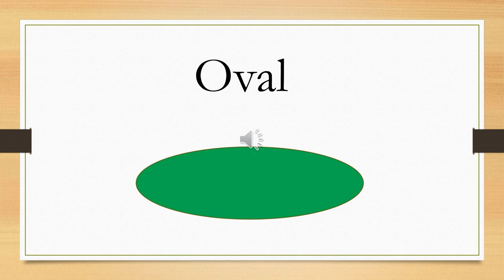The next shape we are doing is an oval. It looks very much like a circle, but its center is somewhere else — it is an elongated shape. Can we all say the word oval? Once more — oval.